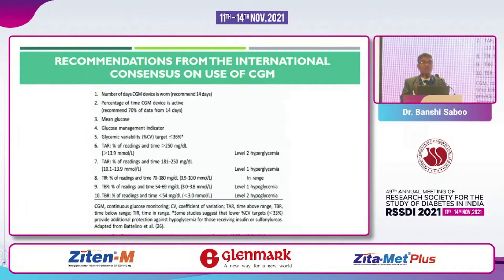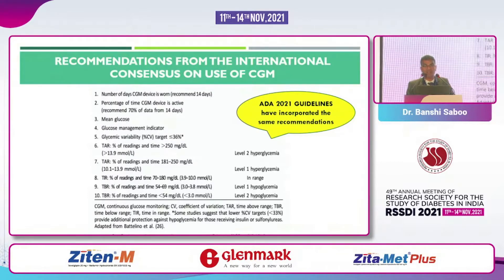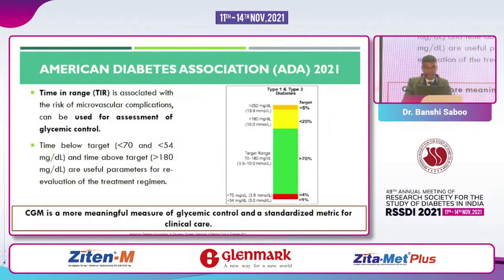This recommendation from the international consensus on use of CGM — I was part of this international consensus — stated that more than 70% of the time one should have sugar between 70 to 180 mg/dL. This was accepted by the American Diabetes Association in their guidelines and became a recommendation in 2020-21: more than 70% of the time someone should be in range, which we call time in range.